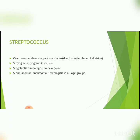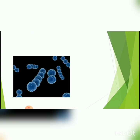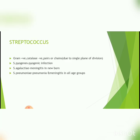Streptococci are gram-positive cocci and catalase negative, arranged as pairs or chains due to single plane of division. Here the cell division occurs in a single plane so they appear like pairs or chains, as you can see in this picture. Members of the genus streptococcus are part of normal flora, but some members can cause infections or diseases. Examples include streptococcus pyogenes which causes pyogenic infection, streptococcus agalactiae which causes meningitis in newborns, and streptococcus pneumoniae which causes pneumonia and meningitis in all age groups.